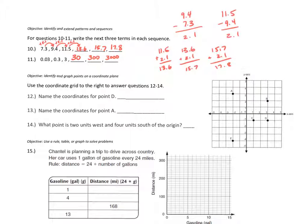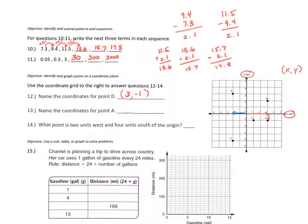The next objective is to identify and graph points on a coordinate plane. Remember: the horizontal axis is the x-axis, the vertical axis is the y-axis, and ordered pairs are always written as (x, y) — horizontal first, then vertical. For point D, we go over to x equals 3 and down to y equals negative 1, so D is at (3, −1). Point A is at negative 2 on the x-axis and positive 3 on the y-axis, so A is at (−2, 3).